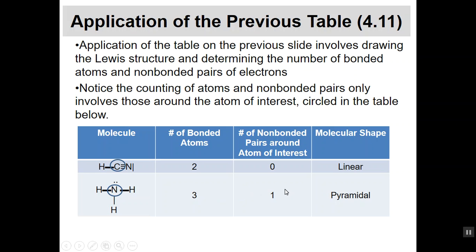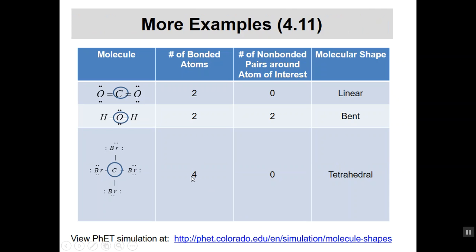Pyramidal is kind of like putting three fingers on a table with your knuckle representing the nitrogen on top. Then looking at carbon dioxide: the central carbon has two bonded atoms — an oxygen on each side — and no non-bonded electrons, so it's going to be a linear molecule.